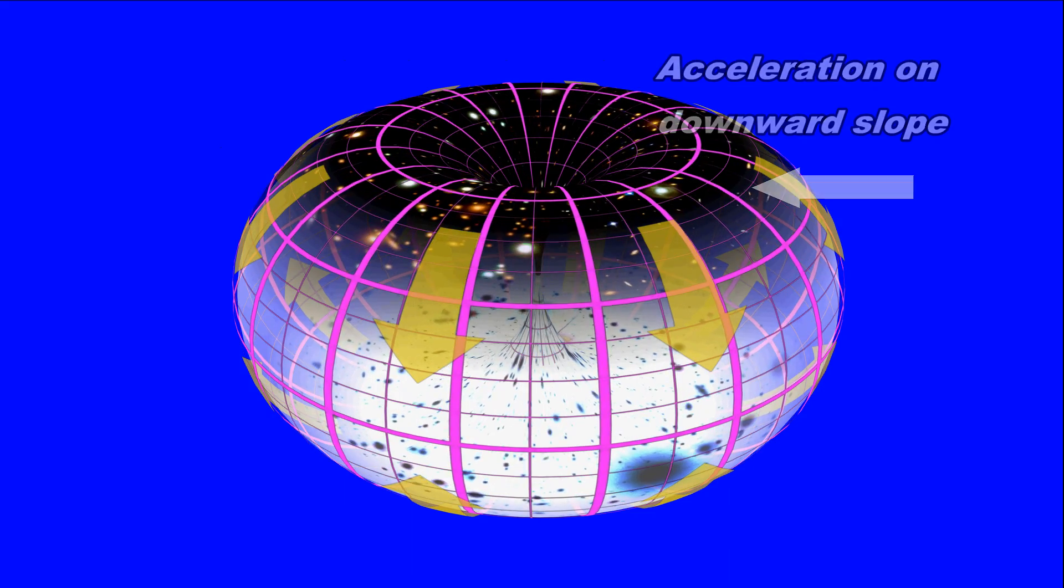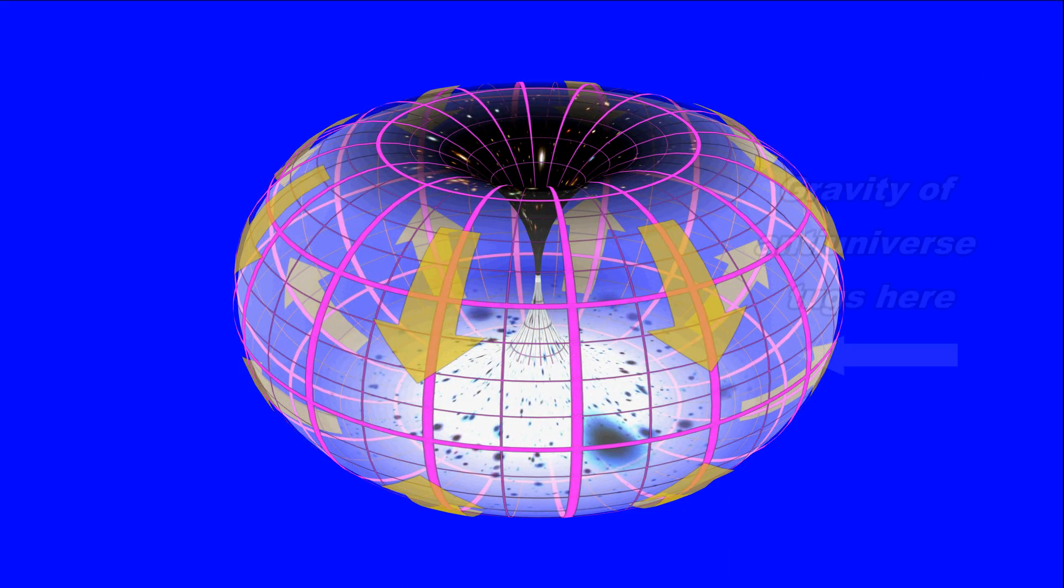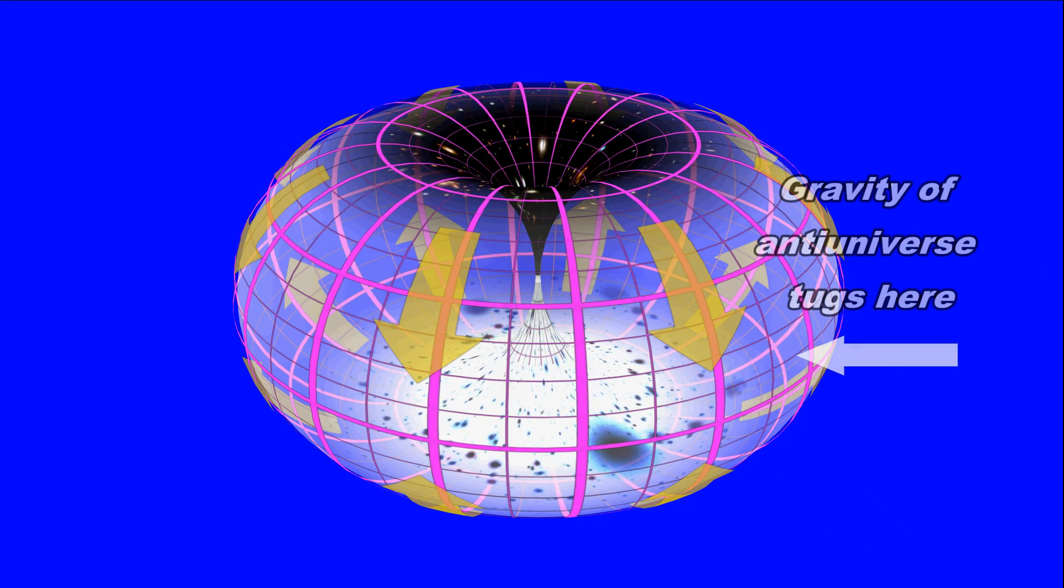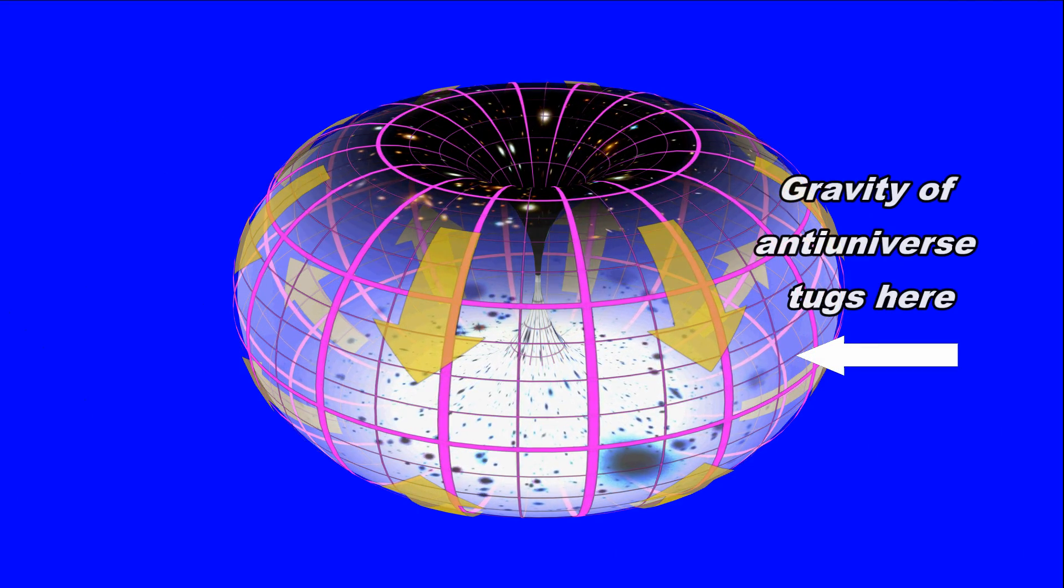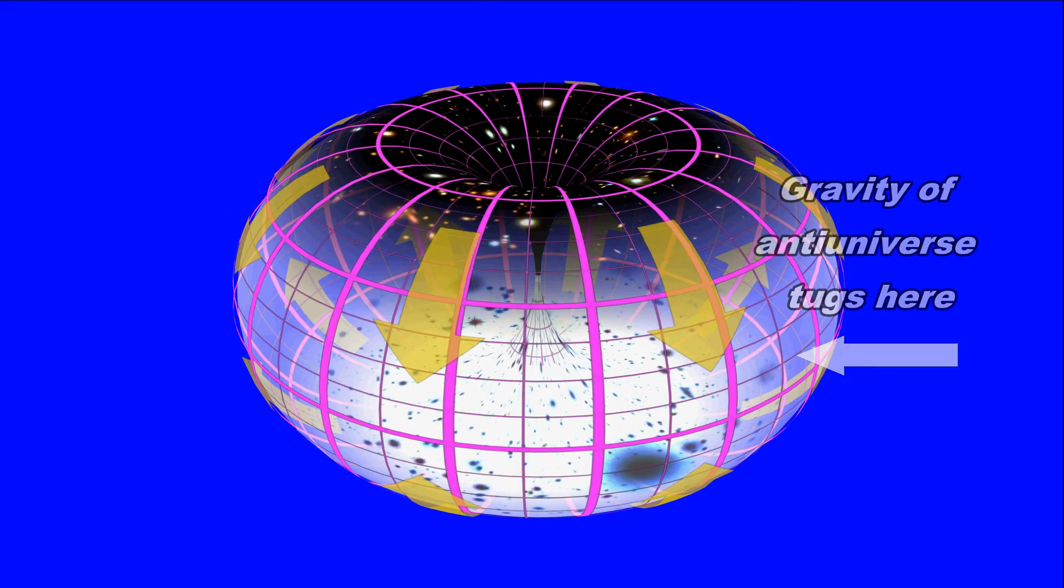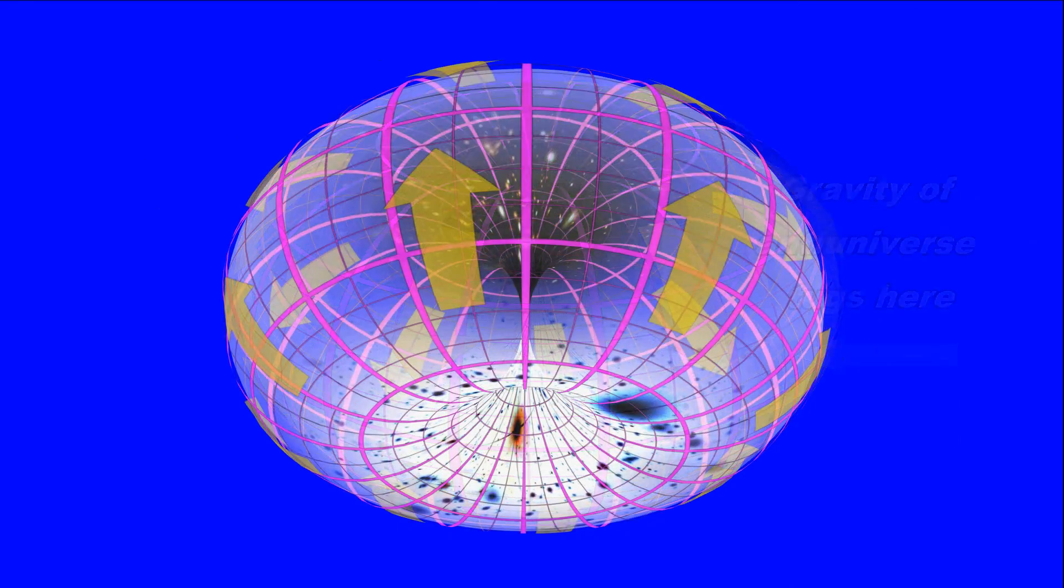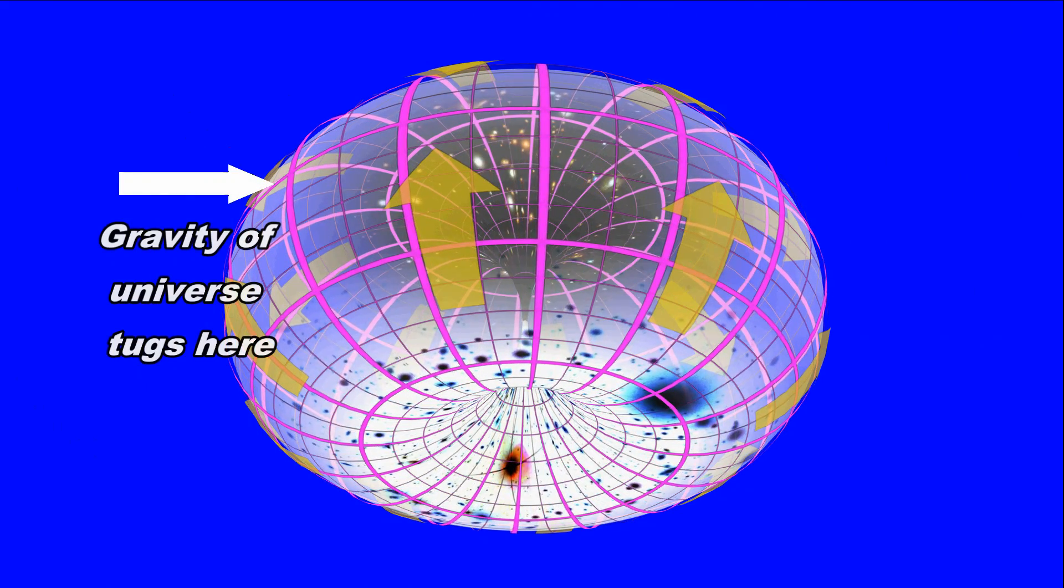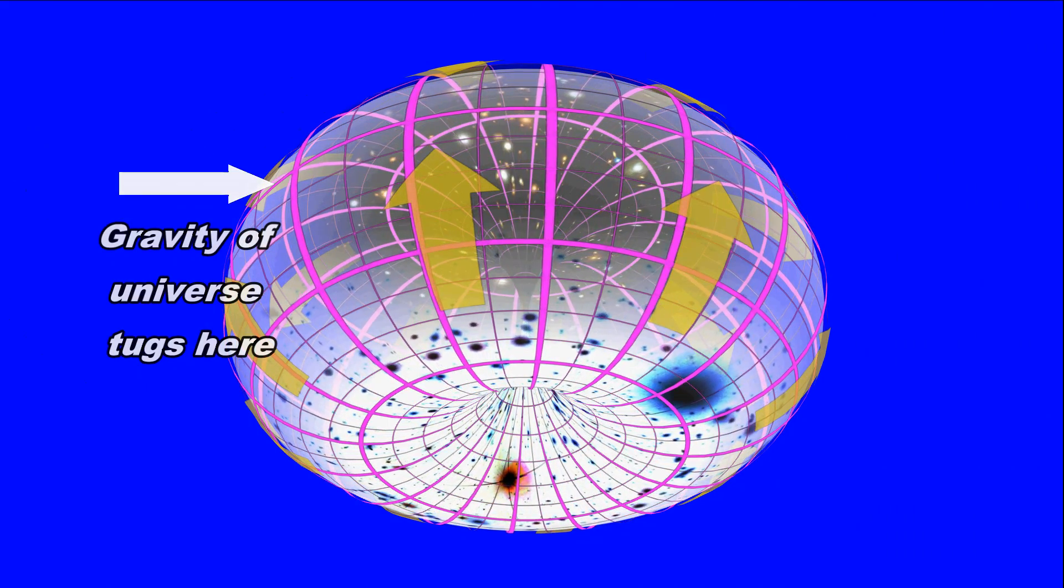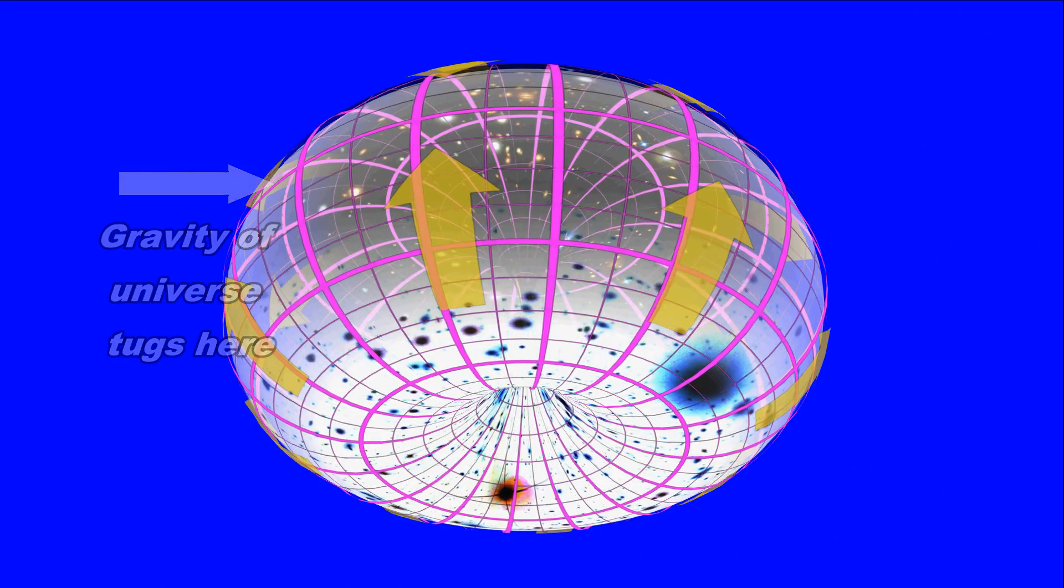The answer is gravity. As it slips down the bagel's outer slope, the normal universe falls under the seductive sway of the antimatter universe's gravity and speeds up. And the antimatter universe is caught by the come-hither power of the matter universe's gravity, and it too speeds up.